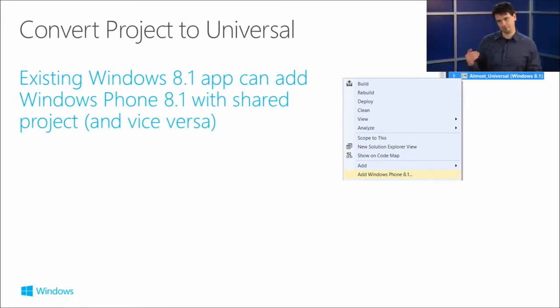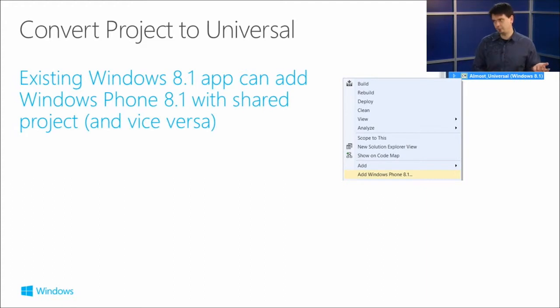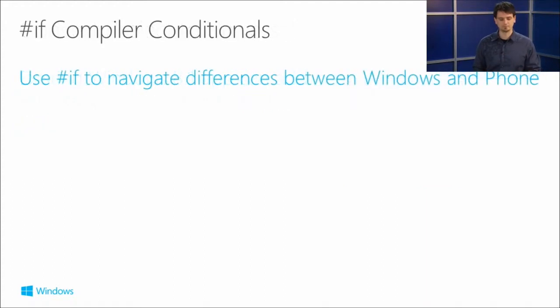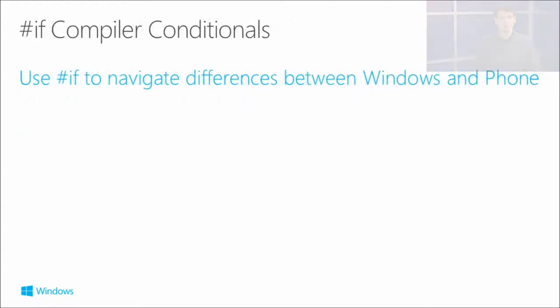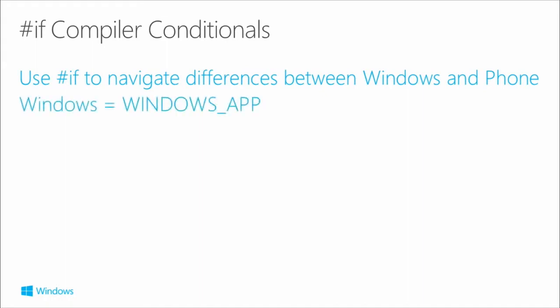There is no shared project between Silverlight and Windows 8.1 applications. But we can right-click on the application and go add Windows Phone or Windows 8.1. If we have API differences to navigate, we can use the #if compiler conditionals — you've probably seen us use this a few times to sort out differences between Windows and Phone APIs.